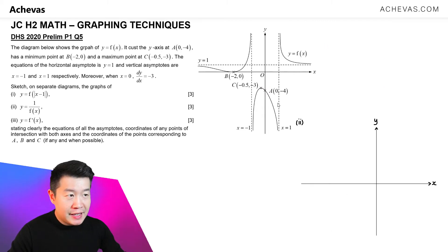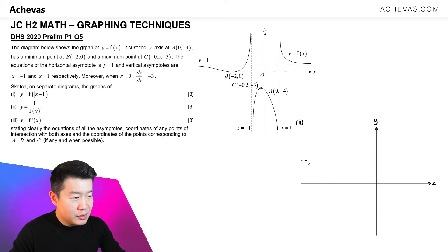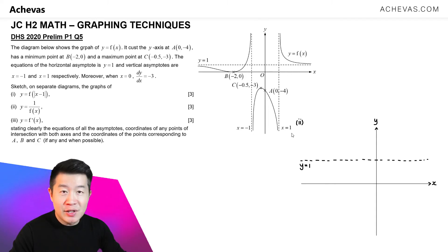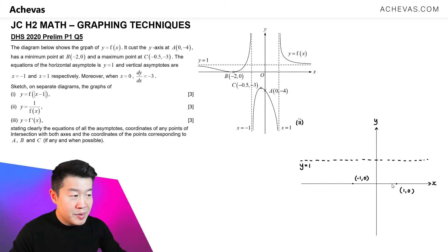For y = 1/f(x), let's first focus on all the asymptotes. The horizontal asymptote y = 1 becomes a horizontal asymptote of y = 1/1 = 1. The vertical asymptotes x = ±1 become x-intercepts, so we have x-intercepts at (1, 0) and (−1, 0). The graph will pass through these two points.